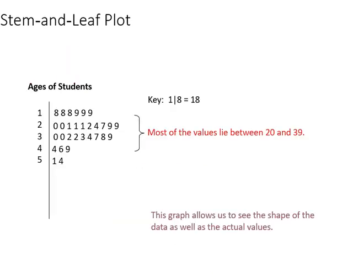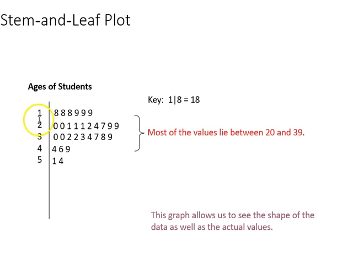The stem and leaf plot looks like this, where we've taken the first decade of each age — 10, 20, 30, 40, and 50 — and over here we've got the individual years within those decades.